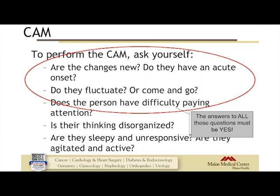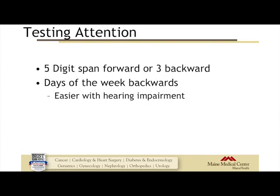To perform the CAM, ask yourself five questions. First: are the changes new — does it have an acute onset? Second: does it fluctuate — does it come and go, with good moments and bad moments? Third: does the patient have difficulty paying attention? All three must be yes. For testing attention, I use the five-digit span — '2, 3, 6, 4, 1' — most people, even with moderate dementia, can say those back to me if they are attentive.